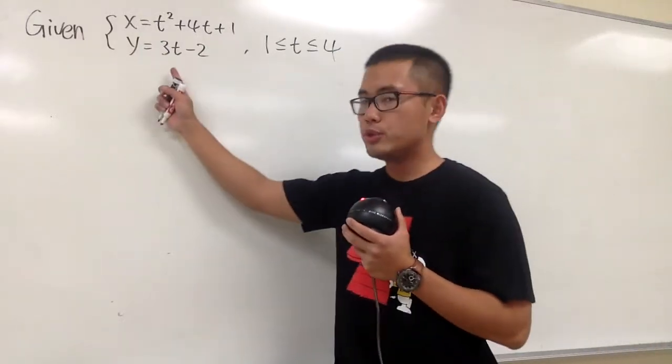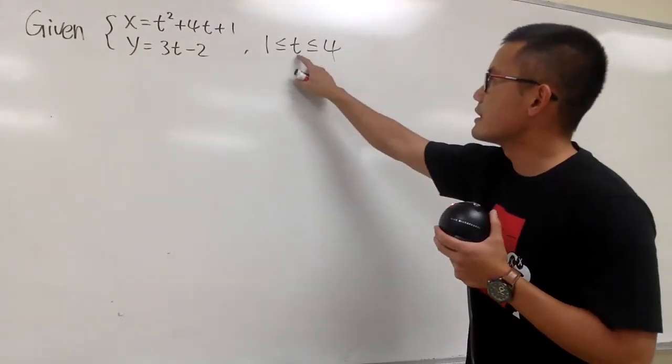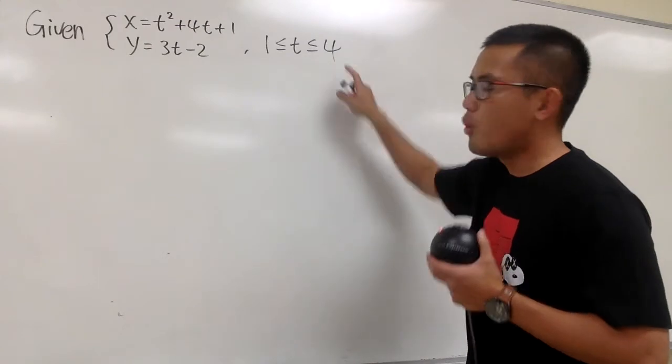Okay, we're given this parametric equation under the interval that t is in between 1 and 4.